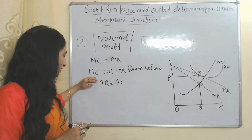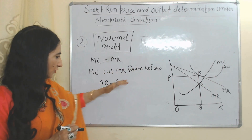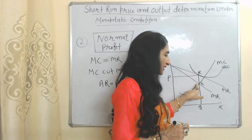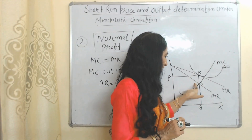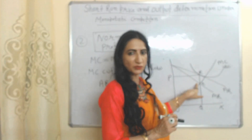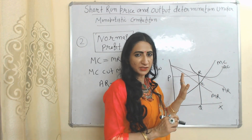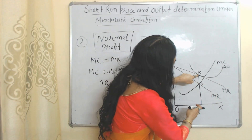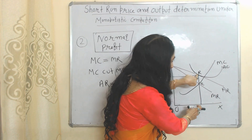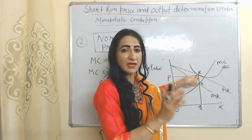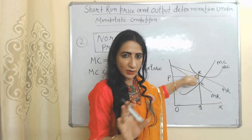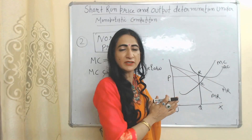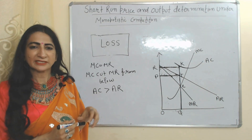Now we will see normal profit. Conditions: MC equal to MR, MC cuts MR from below, average revenue equal to average cost. At the E point you can see MC equal to MR plus MC cuts MR from below. At this R point, RQ is our average revenue and RQ is our average cost — that means average revenue and average cost are both equal to each other, so we can say the firm is receiving normal profit.